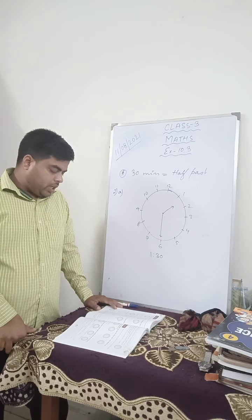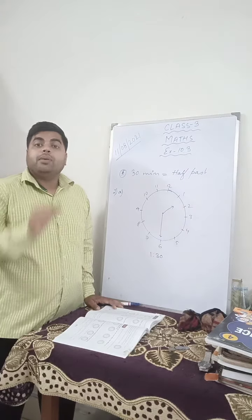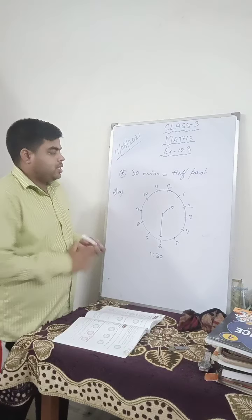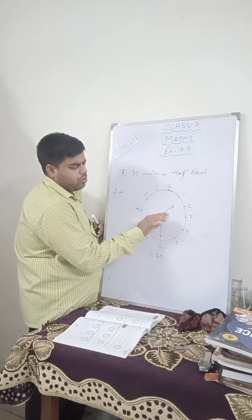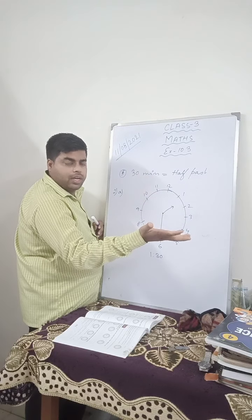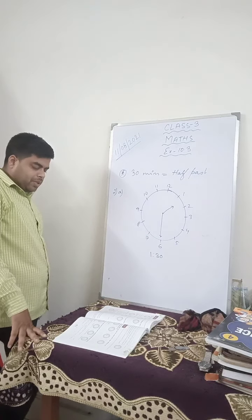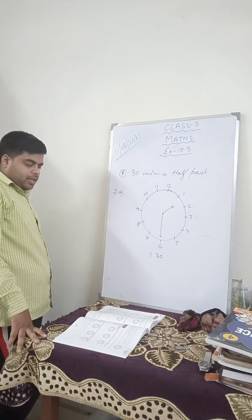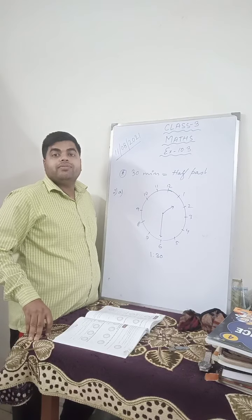Number B: at 2:30, the minute hand is on 6 and the hour hand is between 2 and 3. When it is 2:30, the hour hand will be in between 2 and 3 because it has already crossed 2 and it is about to become 3. When the time is 5:30, we can also read it as half past 5.